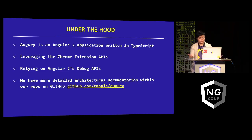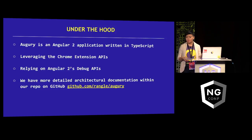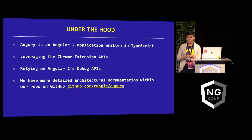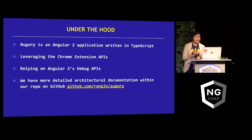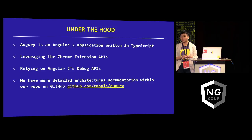A little bit about Augury as software: Augury is obviously a Chrome extension, but under the extension wrapper, Augury is really just an Angular 2 application written in TypeScript. We're using the Chrome extension API and relying heavily on Angular 2's debug API. Here we have to give a special thanks to Tobias, Igor, Papa Mishko, and the rest of the Angular core team for tailoring this debug API to our needs and helping us tremendously along the way. If you're interested in knowing more about the architecture of Augury, we have more detailed documentation on our repo on GitHub.